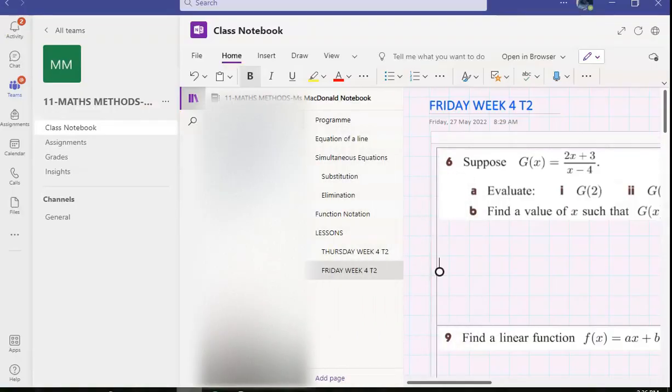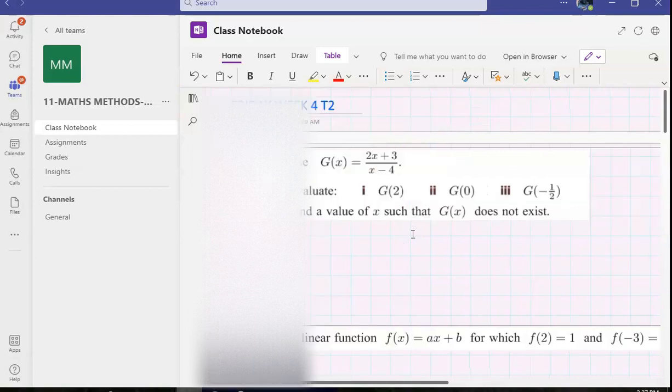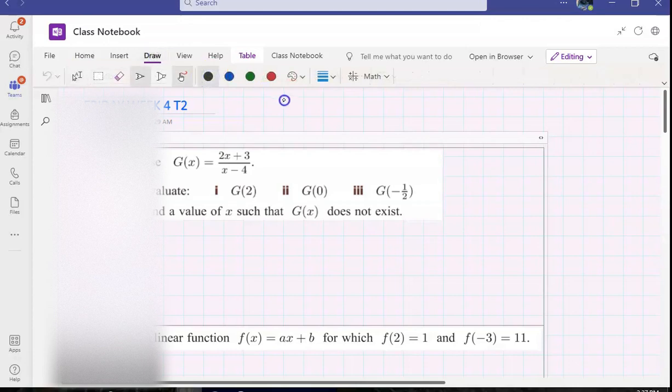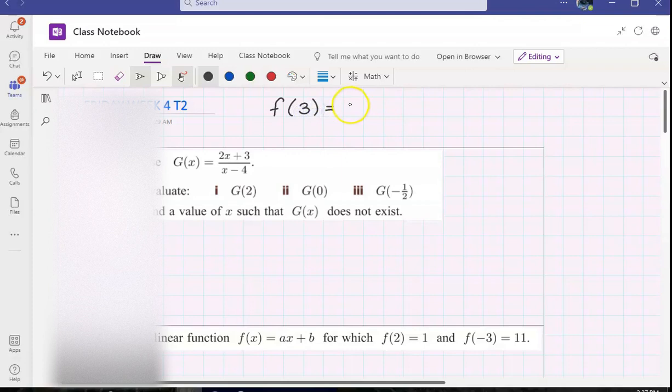What we have so far with our notation. We know that if you see f of 3 equals 2, what does that mean? It means when x is 3, y equals 2. That's a fancy way of saying the point (3, 2), right? We're just fancying it up a bit.